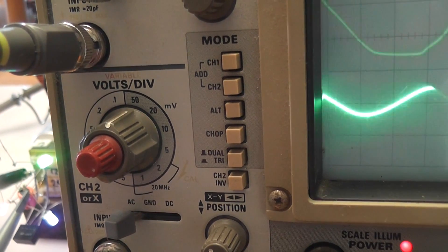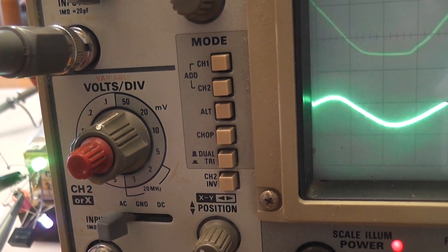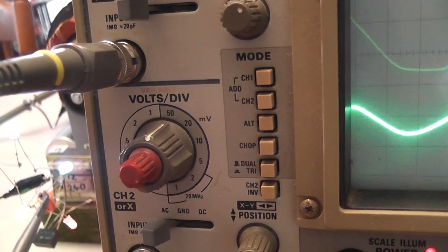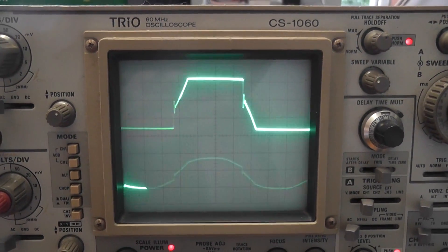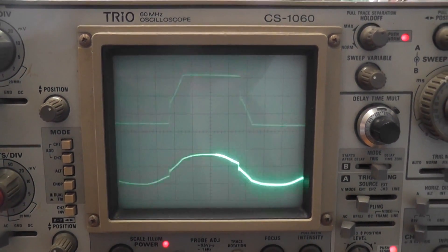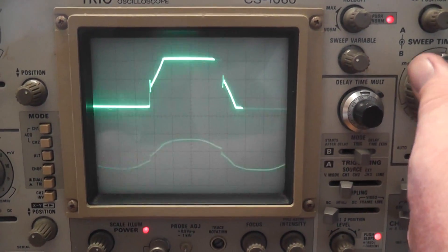And the scale division is 10 millivolts. Correction, 15 millivolts per division. And here we've got the top one is the output versus the input on the transformer. Very ugly wave shapes.